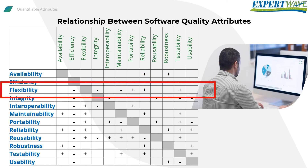Flexibility, for example, decreases efficiency and maintainability, but increases reliability. Therefore, all the non-functional requirement characteristics might not all be applicable together. Sometimes you and the client have to choose what you actually want. In other words, you can't have everything.